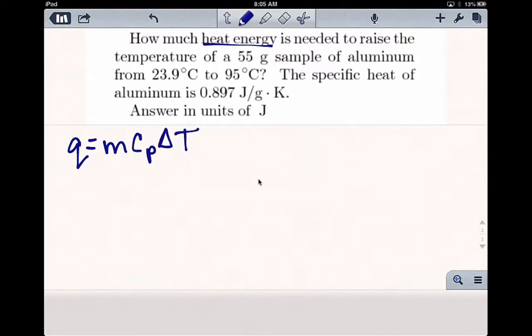So let's identify the given. What are we given? The mass of our aluminum is 55 grams. The specific heat is given to us here, 0.897. And of course, if we didn't have that, we could always look in a table.